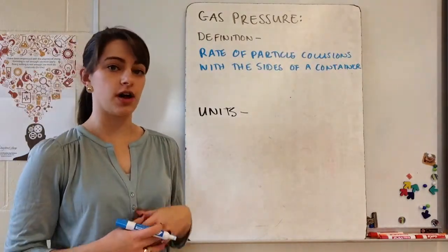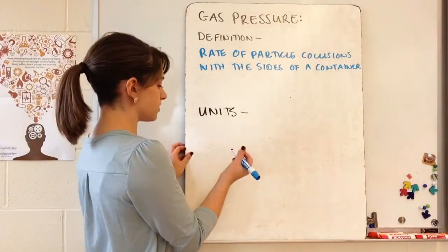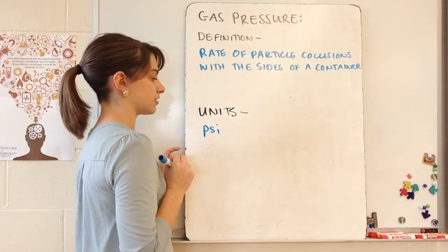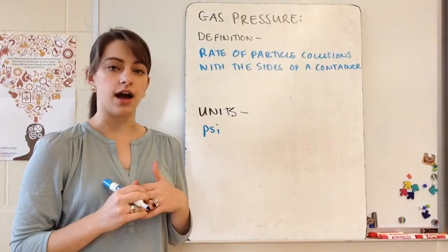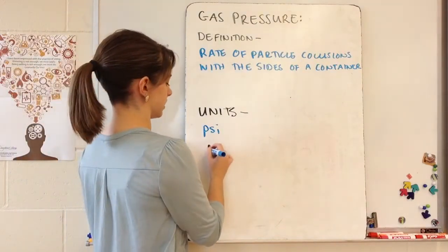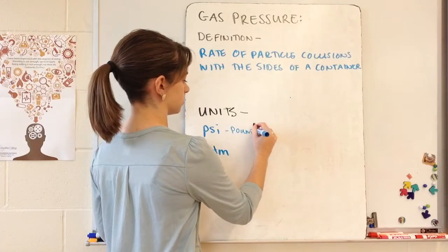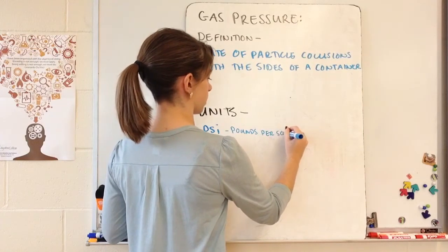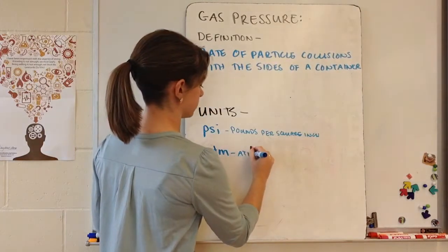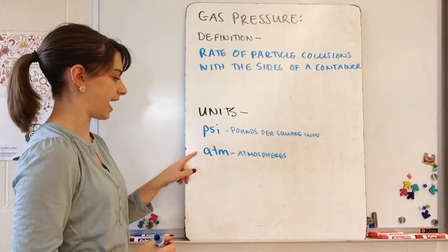When we talk about units for pressure, we have lots of units we can use. One that you might be familiar with — because you'll see it on car tires and bike tires — is PSI, which stands for pounds per square inch. Another common pressure unit is ATM, which stands for atmospheres.